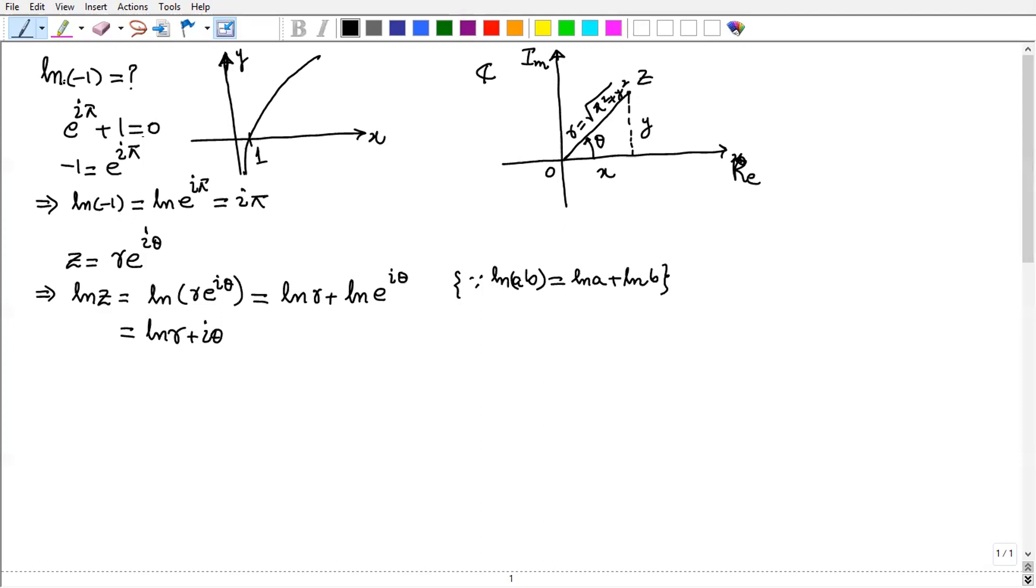Now come to log negative 1. So negative 1 is here. So if you consider negative 1 as a complex number, so the value of r will be 1 and the angle theta is pi. So put these values here. So now log minus 1 equals log 1 plus i pi. And we know that log 1 is 0. So 0 plus i pi equals i pi. So that's the value of log minus 1 which is i pi.